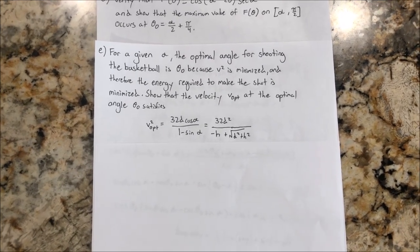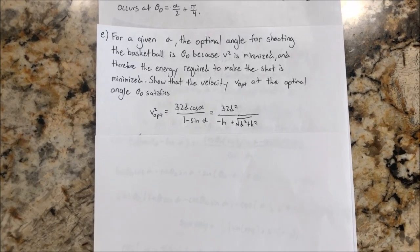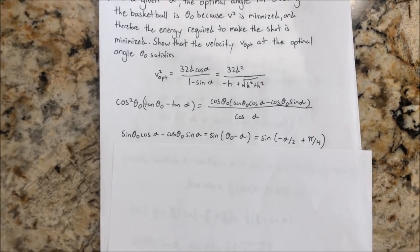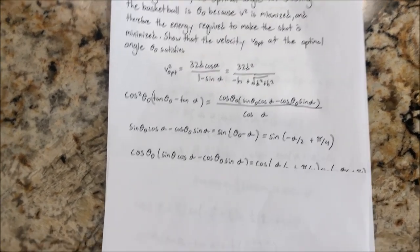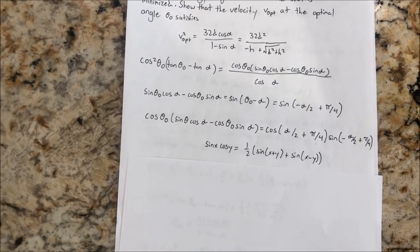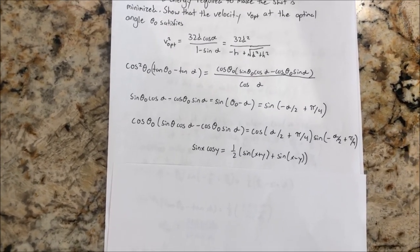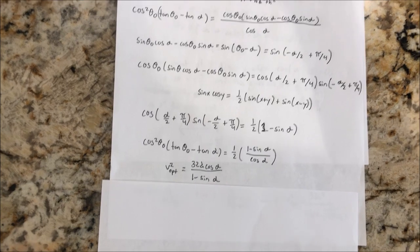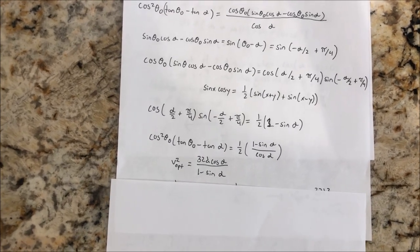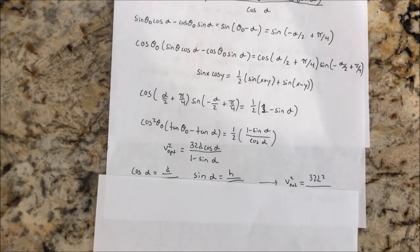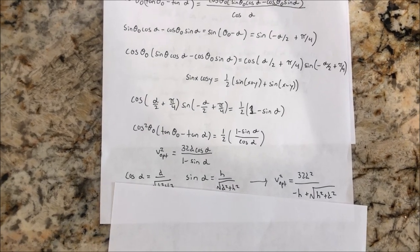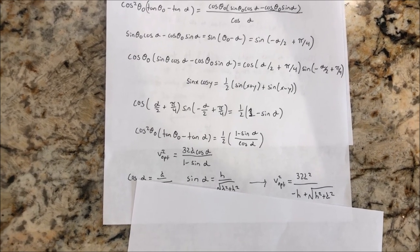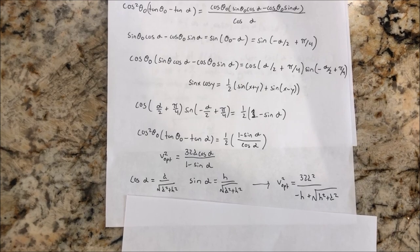And then that is equal to 32d squared over negative h plus root of d squared plus h squared. So first we want to plug in theta 0 and simplify and then apply the sine law of addition. And then we want to use the identity that follows from the sine law of addition. And then we would get to v squared optimal is equal to 32d cosine alpha over 1 minus sine alpha. And then we can solve for cosine alpha and sine alpha and then plug it back in to get v squared optimal is equal to 32d squared over negative h plus root of h squared plus d squared.